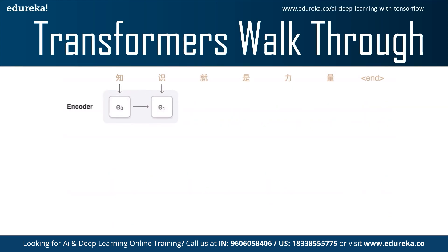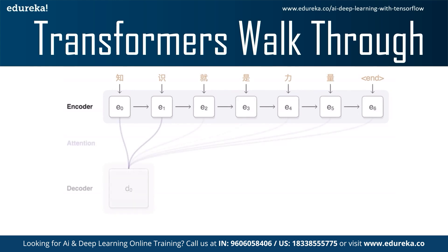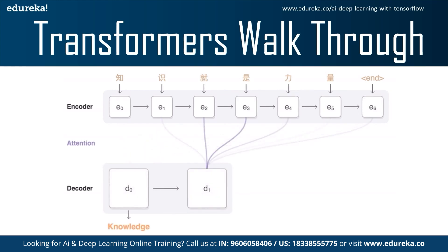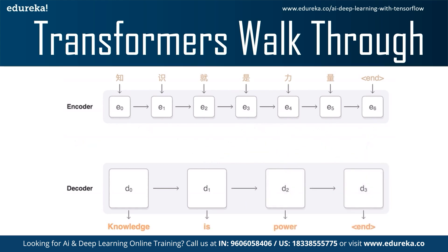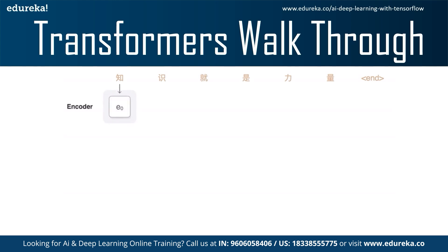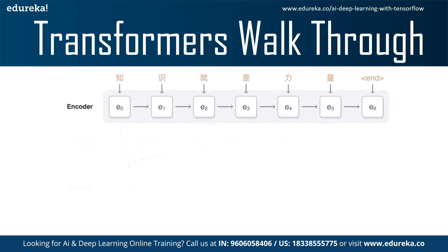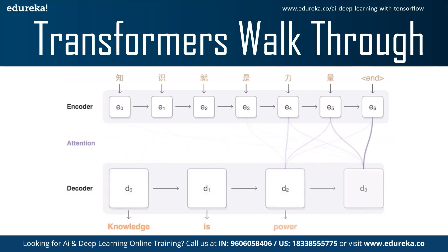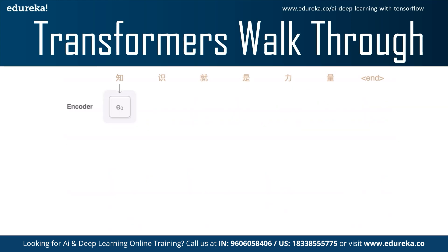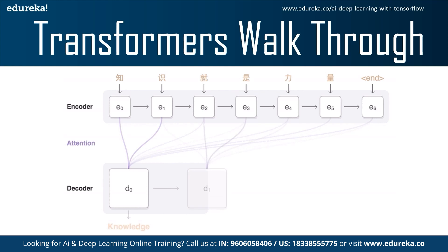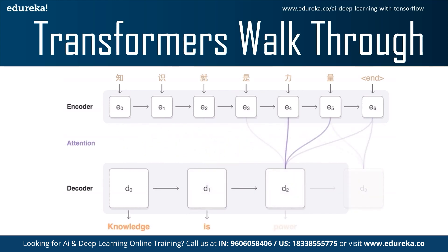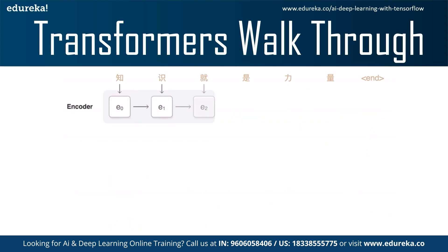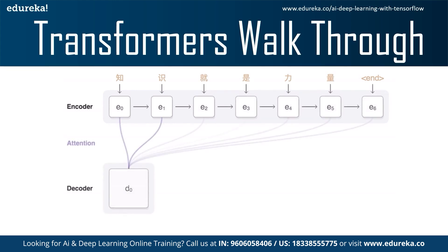One of the best examples of Transformers is Google's BERT. In the Transformer architecture, we have the encoder on top and the decoder on the bottom. Both encoder and decoder are comprised of modules that can stack on top of each other multiple times. The inputs and outputs are first embedded into an N-dimensional space. An important part of this model is the positional encoding of different words — since there is no recurrent neural network to remember how sequences are fed, every word must be given a relative position, and these positions are added to the embedded representation of each word.